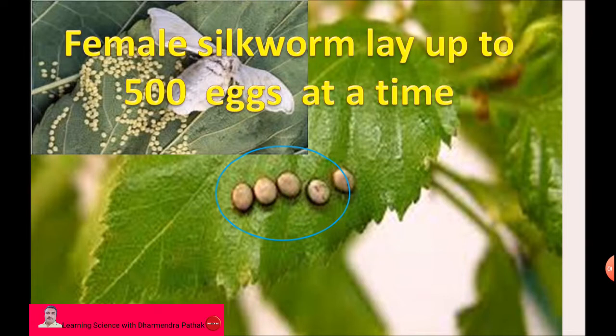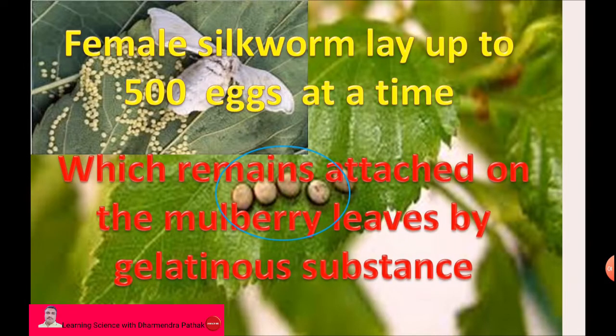The female silkworm lays up to 200 to 500 eggs at a time. The eggs remain attached to mulberry leaves by a gelatinous substance, and the eggs are golden or yellow colored.